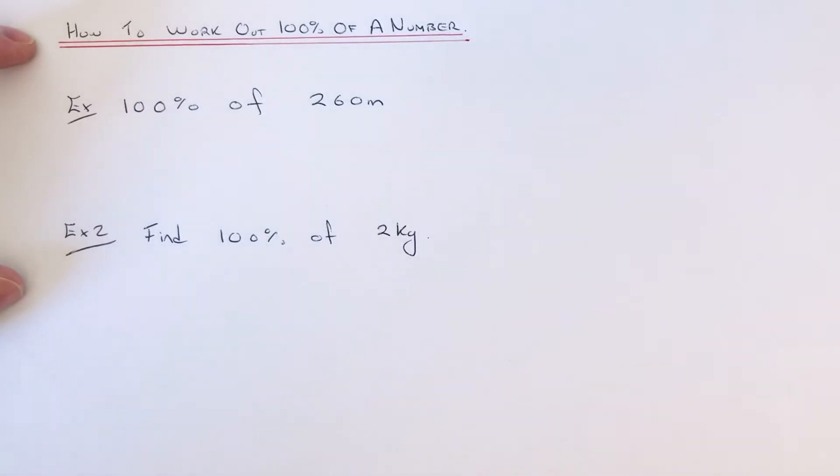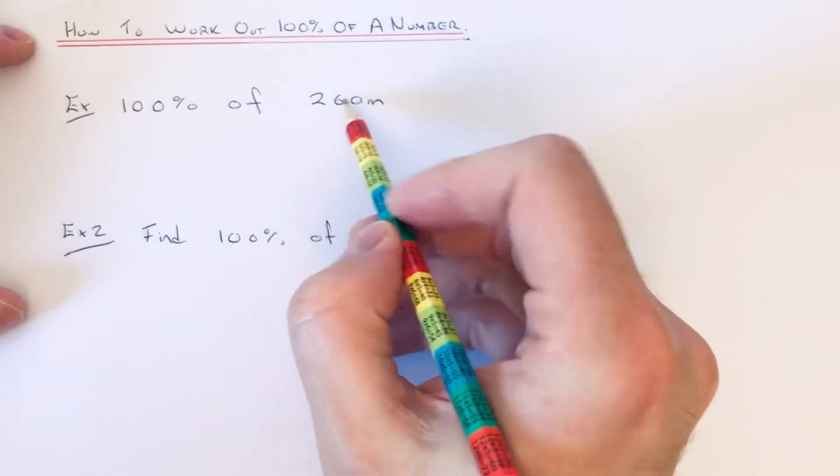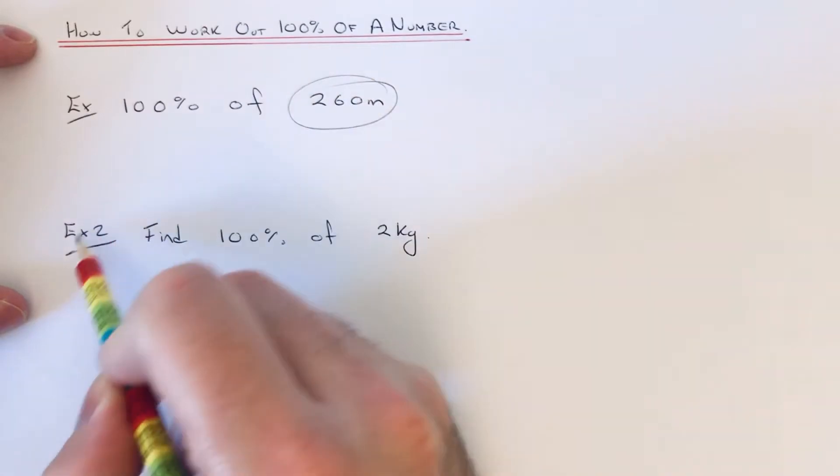Basically, all you need to do is just write down the original number. So let's have a look at the first example. We need to work out 100% of £260, so we don't need to do anything with this number.